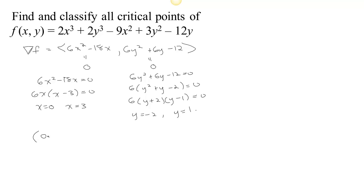Here are the 4 critical points: x equals 0 and y equals negative 2; x equals 0 and y equals 1; x equals 3 and y equals negative 2; or x equals 3 and y equals 1.